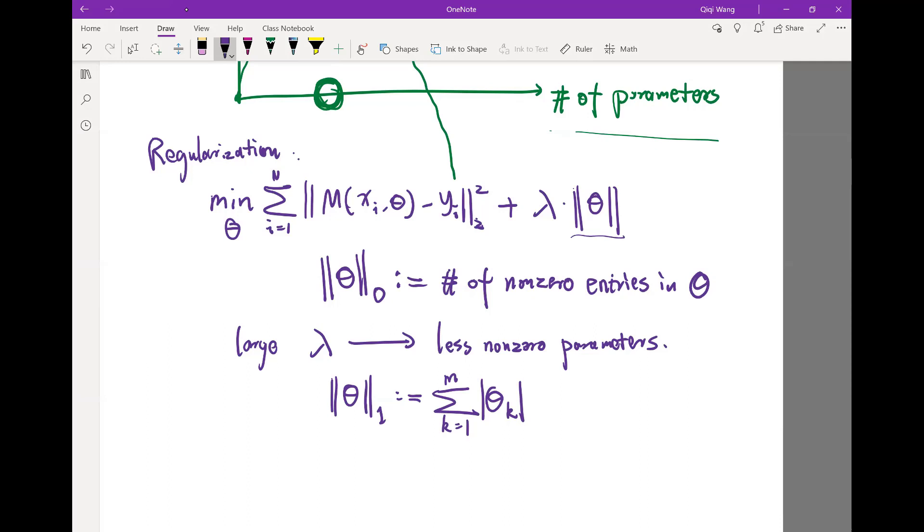This achieves a similar effect as the L0 norm. Because if you have a strong enough lambda, if you have strong enough L1 regularization, you actually get a sparse theta. You have a bunch of zeros that are forced to zero because of the regularization.